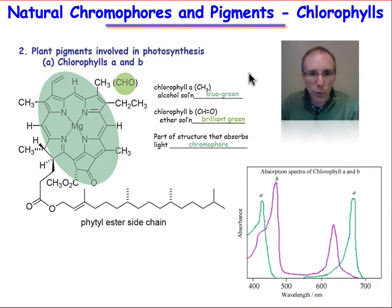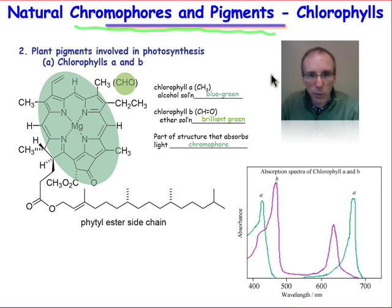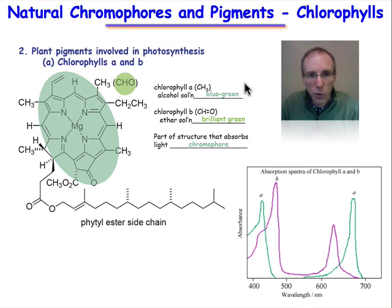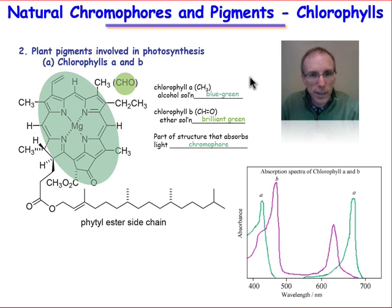The world we live in is a colorful one because chromophores and pigments are naturally produced. Not only do they make brilliant colors, but nature utilizes them to harvest the energy from the sunlight. I'll take you through a very quick tour of some of the chromophores that are found in nature, and the main thing I want you to pay attention to is the extended pi-delocalization that's seen in these systems.